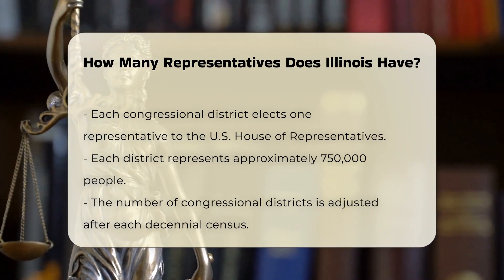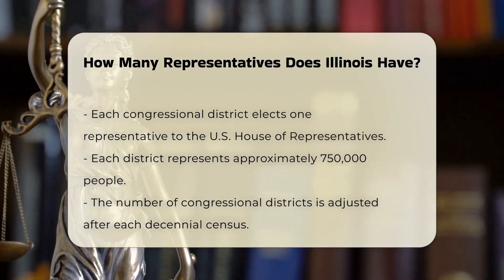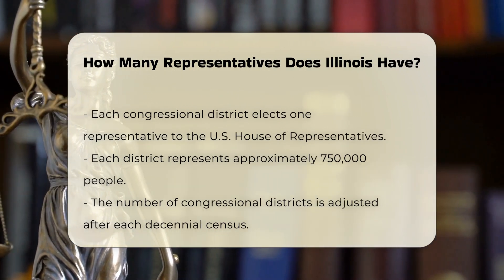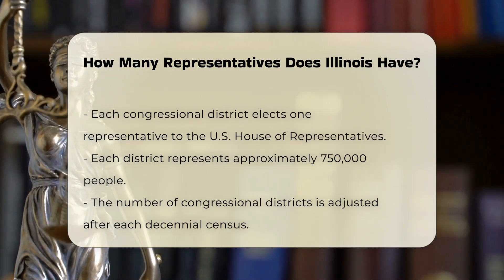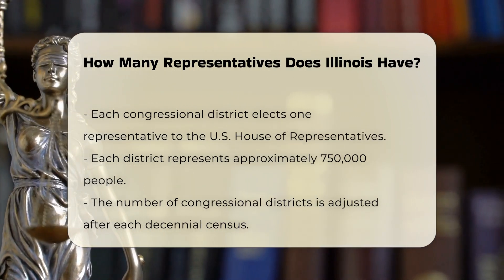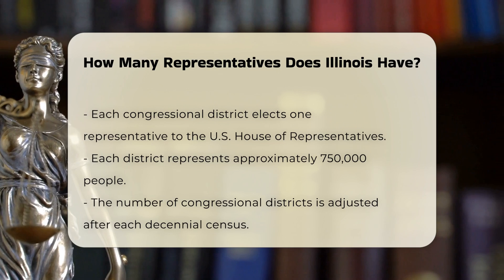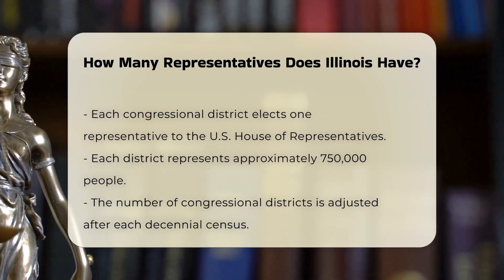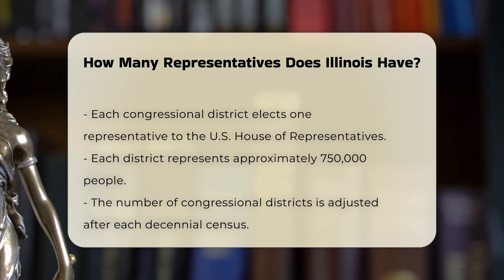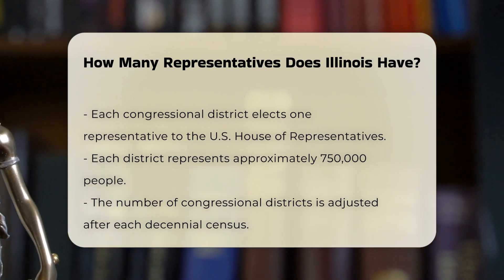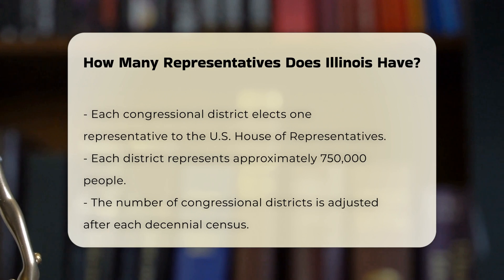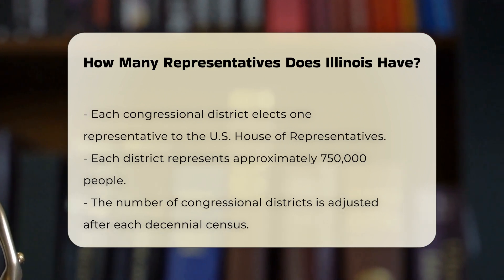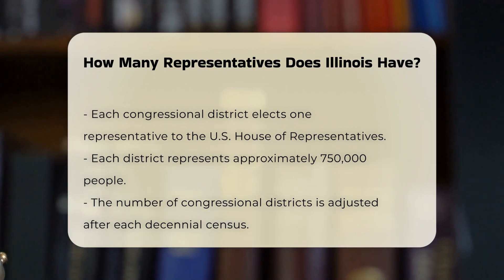Each of these 17 districts represents roughly 750,000 people in the U.S. House of Representatives. This number is fixed and is adjusted only after each decennial census conducted by the U.S. Census Bureau.